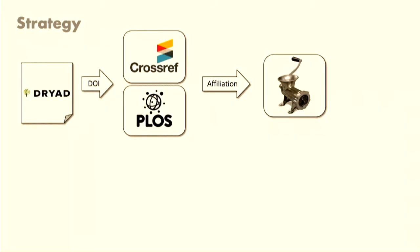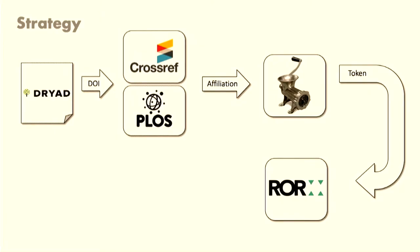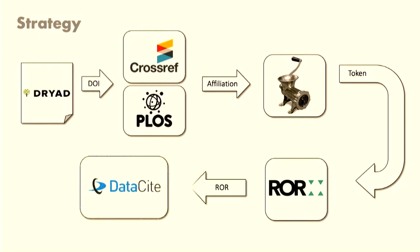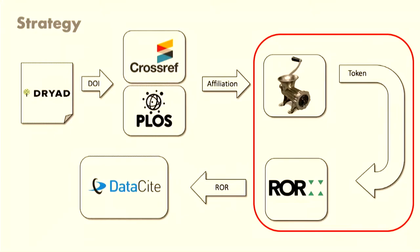We get the affiliations out of either Crossref or PLOS. We also have a small army of curators that are manually generating some — hard and much appreciated work. That goes into the meat grinder, and out of that comes a token. The token goes into ROR to try and convert the token into an identifier. The goal in the end is to get those identifiers into the data site metadata for these datasets. What I'm going to focus on today is taking the affiliation data from Crossref and PLOS and trying to generate RORs.